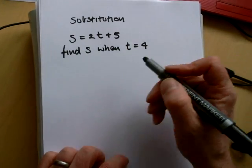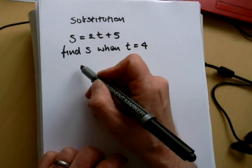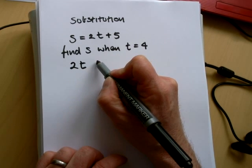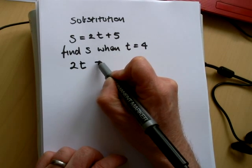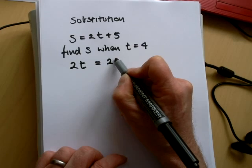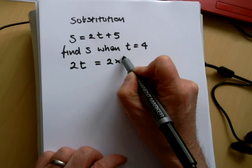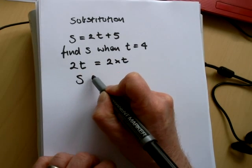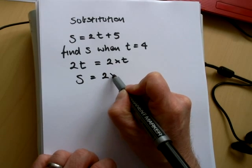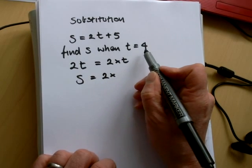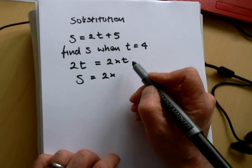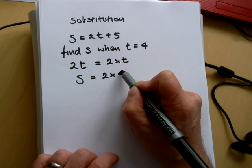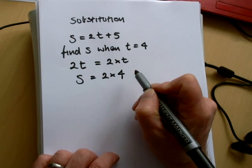So you need to understand the meaning of 2t — 2t means, or is equal to, 2 times t. So s equals 2 times t, but we've been told that t is 4, so we substitute 4 for t.